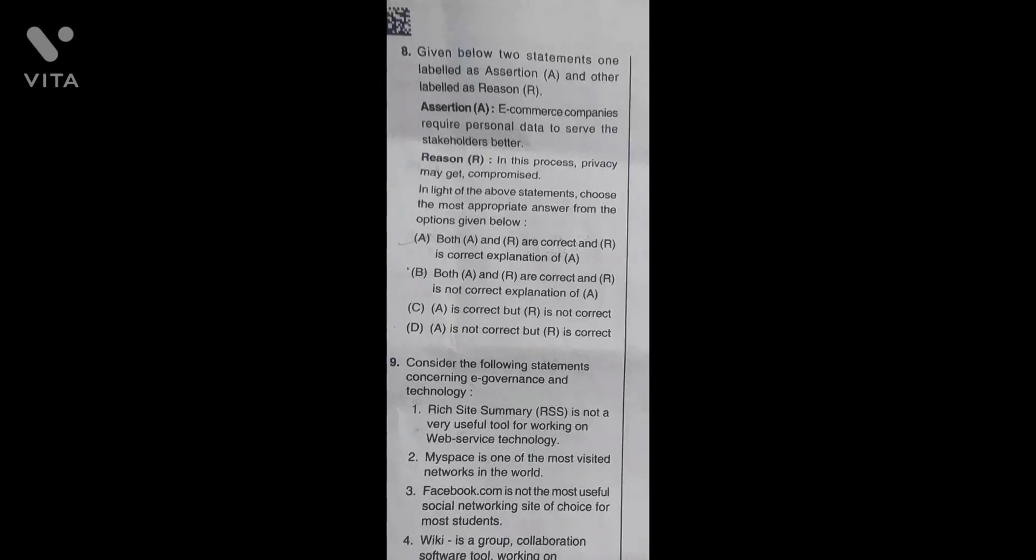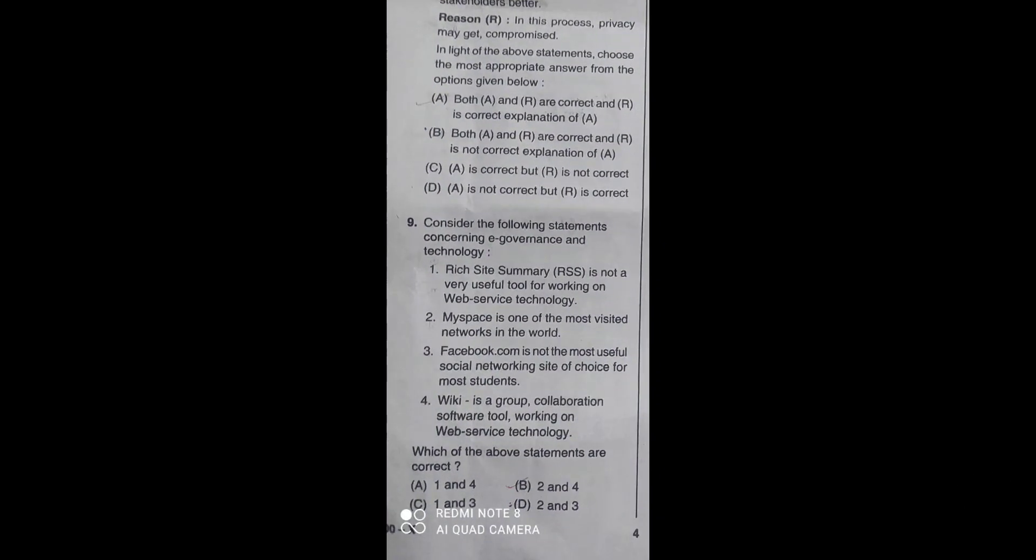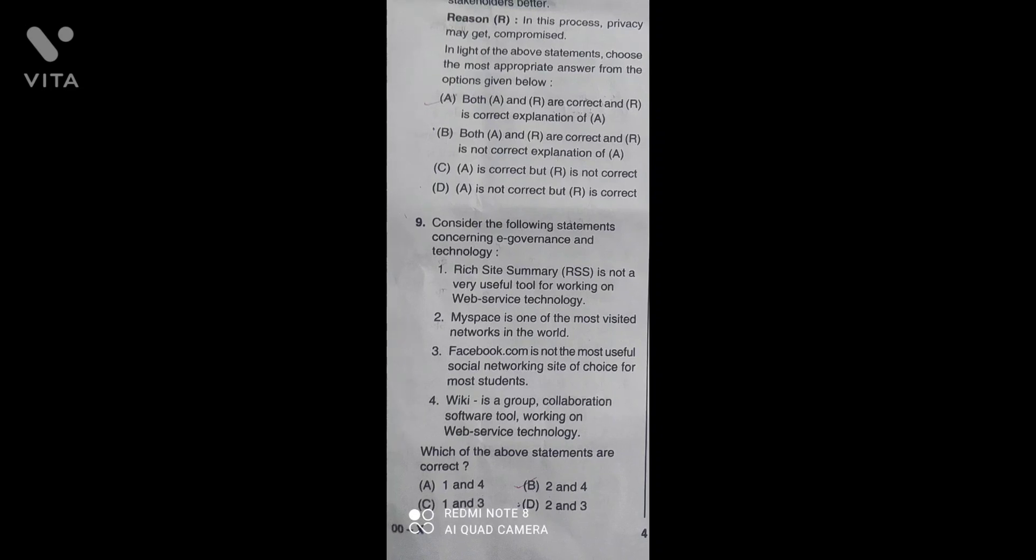Here we have an assertion and reasoning question. E-commerce companies require personal data to serve the stakeholders better. This is correct. In this process, privacy may get compromised. Both A and R are correct, and R is the correct explanation of A. So the correct answer is A.